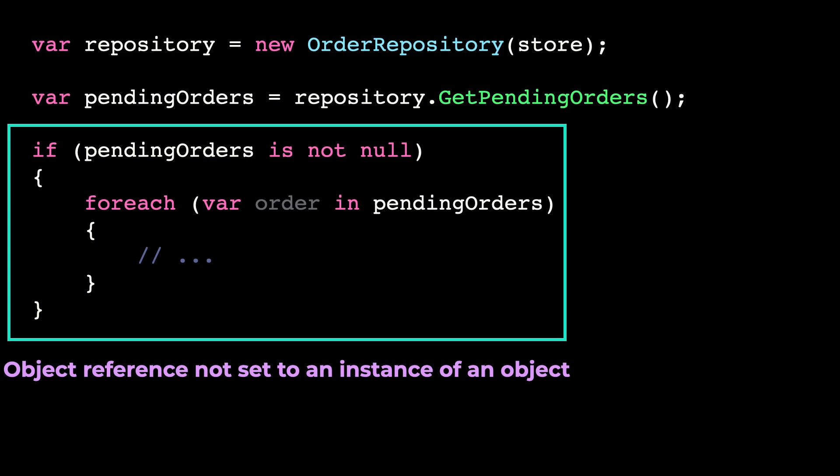Every single consumer will need to do a null check to make sure you didn't return a null. Otherwise, any of those can throw an exception — an object reference not set. But the good news is that there's a simple fix for that.